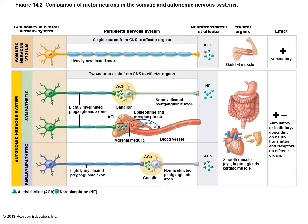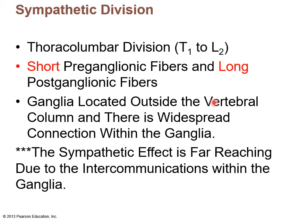The sympathetic division is called the thoracolumbar division because the nerves supplying fibers to effectors come from spinal nerves T1 through L2. In the sympathetic division, the first neuron has very short preganglionic axons and very long postganglionic axons. These short preganglionic fibers result in ganglia located very close to the spinal cord, outside the vertebral column. There is widespread connection within the ganglia, making the sympathetic effect very far-reaching due to intercommunications within the ganglia.